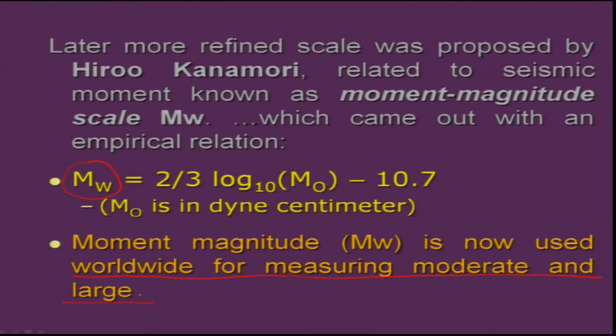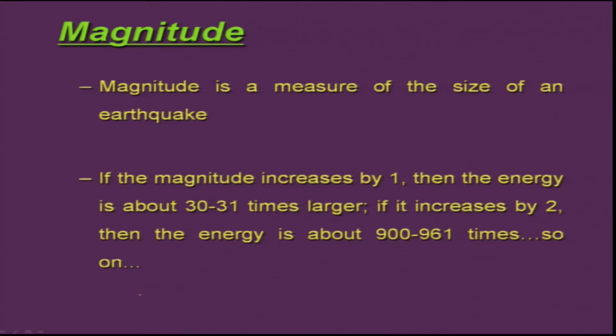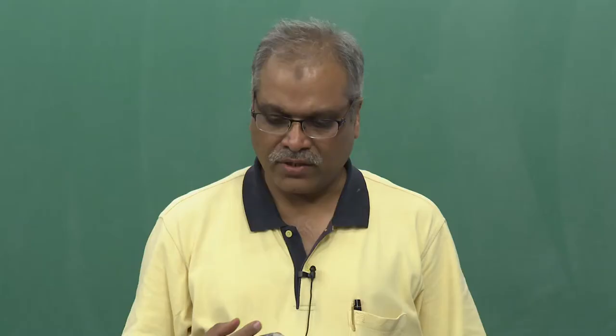In short, magnitude is a measure of the size of an earthquake. If the magnitude increases by one, the energy is about 30 to 31 times larger. There is a huge difference between magnitude 7 and 8, or even between 7 and 7.5 or 8 and 8.5.